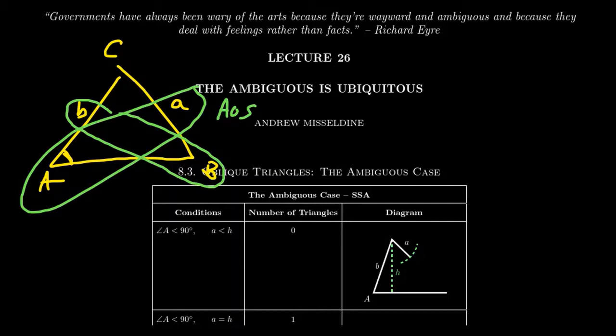In these six cases that we're going to talk about, we're going to consider the altitude h, which equals b sine of A in this situation. We're taking the altitude associated to angle C. By basic trigonometry, you have opposite over hypotenuse with respect to this right triangle, so h equals b sine of A.